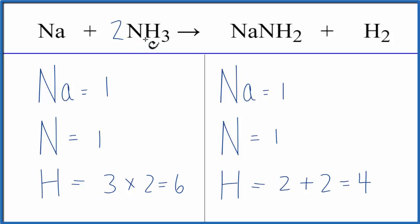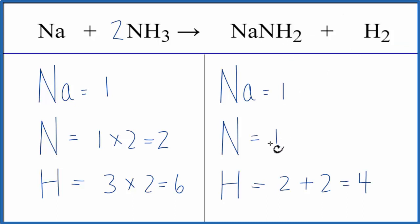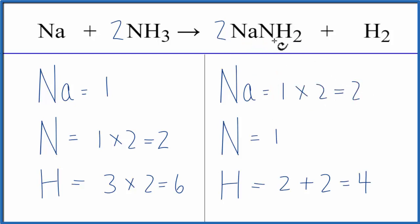This two applies to everything. So we have one times two for the nitrogen — that gives us two nitrogens. Let's fix the nitrogens because that will change the hydrogens again. We have two here and one here, so we'll put a coefficient of two in front. We have one sodium times two, that gives us two sodiums. One nitrogen times the two, so now the nitrogens are balanced.